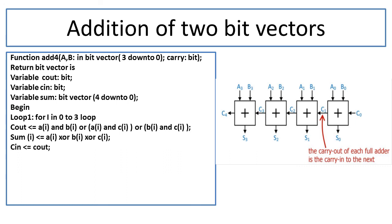After the loop body, we return the carry: the initial carry should be less than or equal to C_out, ensuring it does not exceed the limit of 0 and 1. Then we end the loop with 'end loop loop1'. After that we return the sum: sum(4) should be less than or equal to C_out. As you can see in the schematic on the right, S0, S1, S2, S3 are the sums of individual full adders and the final carry C4 is our sum(4). Finally we return sum as a bit_vector 4 down to 0, and end the function with 'end addition_4'. In this way one can define VHDL functions for addition of two bit vectors.